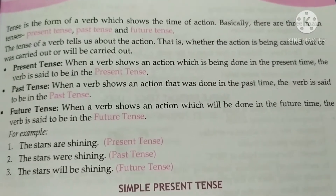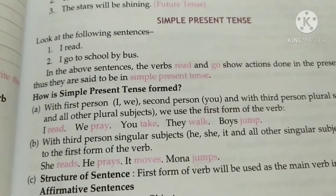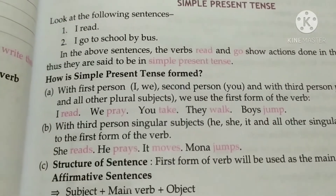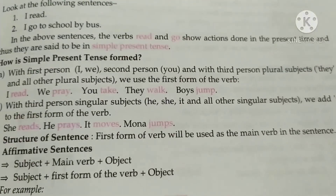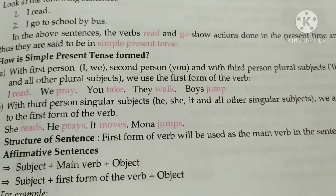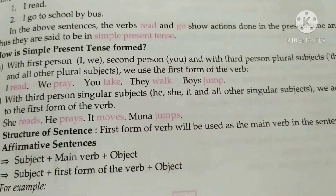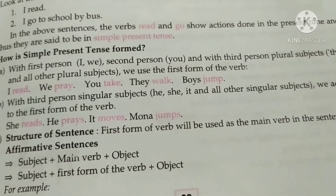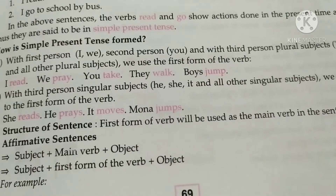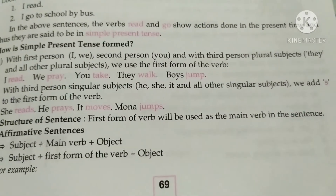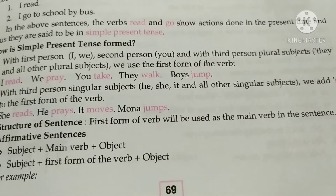Now, simple present tense. Look at the following sentences: 'I read' and 'I go to school by bus.' In these sentences, the verbs 'read' and 'go' show action in the present time, so they are in simple present tense. For simple present tense formation: with first person 'I' and 'we', second person 'you', and third person plural 'they' and all plural subjects, we use the first form of the verb.